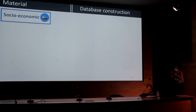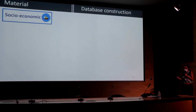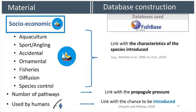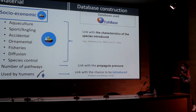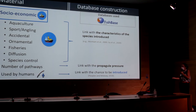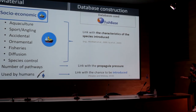Finally, we collected socioeconomic characteristics: seven introduction pathways known to be linked with the characteristics of introduced species, the number of pathways hypothesized to be linked with propagule pressure, and the human use status known to be linked with the chance of being introduced.